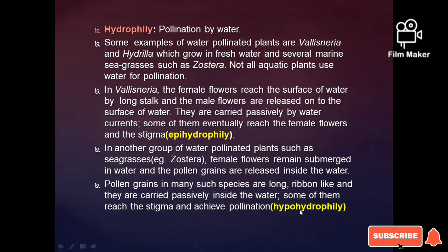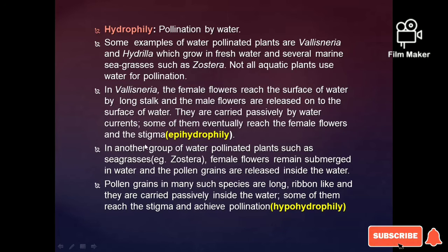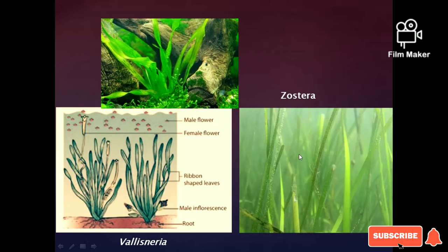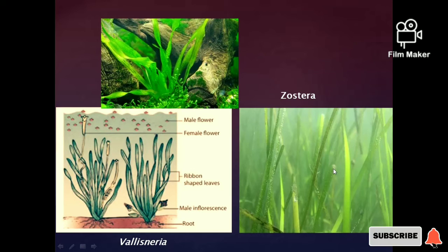The second type of hydrophily is hypohydrophilic pollination, which occurs underwater. For example, in seagrass and Zostera, pollen grains are released underwater and pollination takes place beneath the water surface. Both Zostera and seagrass are examples of hypohydrophilic pollination.